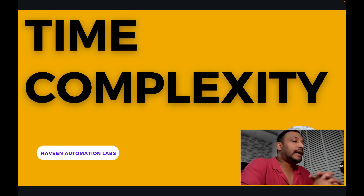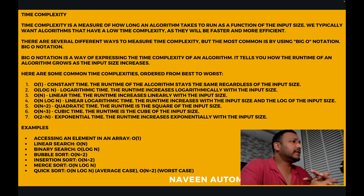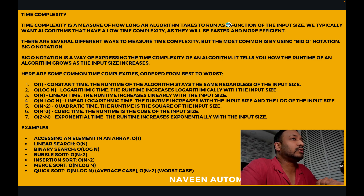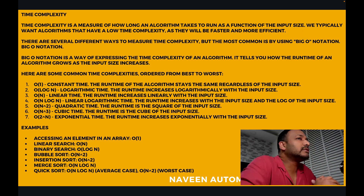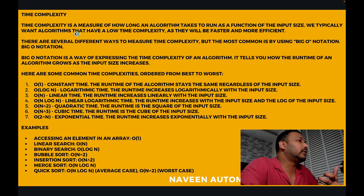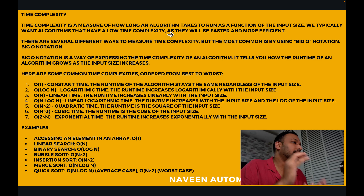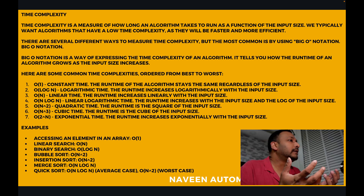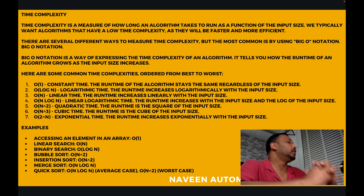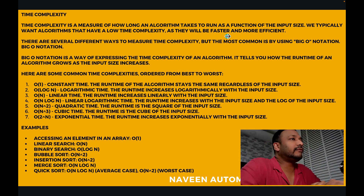So what do you mean by time complexity? A basic definition: time complexity is a measure of how long an algorithm takes to run as a function of the input size. The more input size you provide to the function, it will take more time, depending on what kind of algorithm you are using. We typically want an algorithm that has a low time complexity — whatever logic you have written should take less time even as input size increases. Low time complexity means faster and more efficient code.